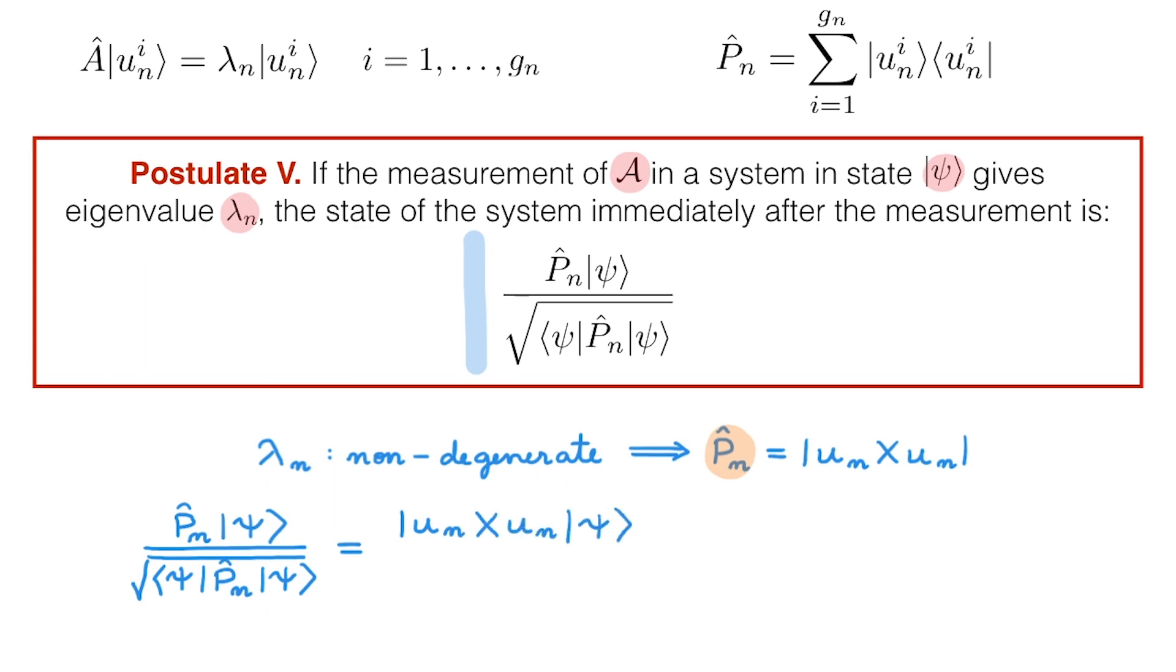If we substitute our expression for the projection operator of a non-degenerate eigenvalue, then we get u n times the bracket u n psi, all divided by the square root of psi u n u n psi. This here is simply the square root of the absolute value squared of u n psi, and therefore the denominator cancels with this bracket. The final result is the state u n.